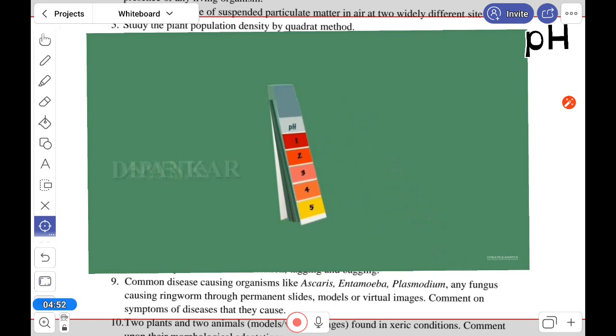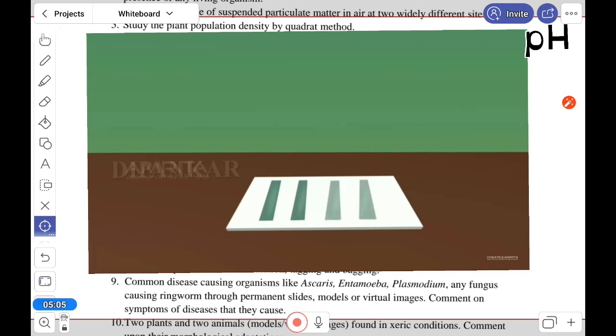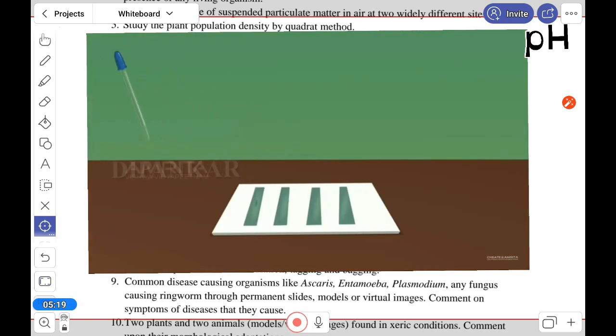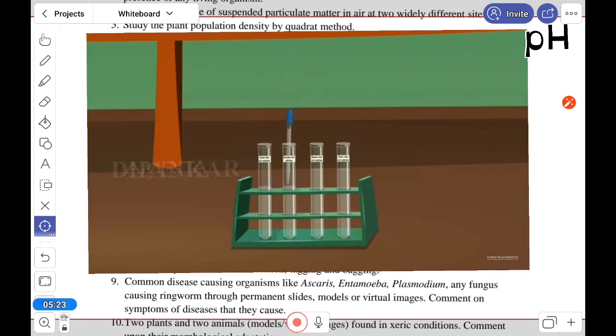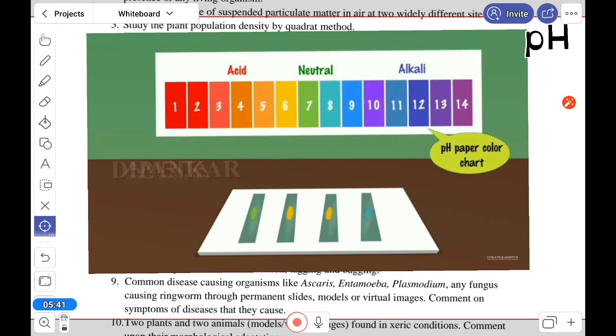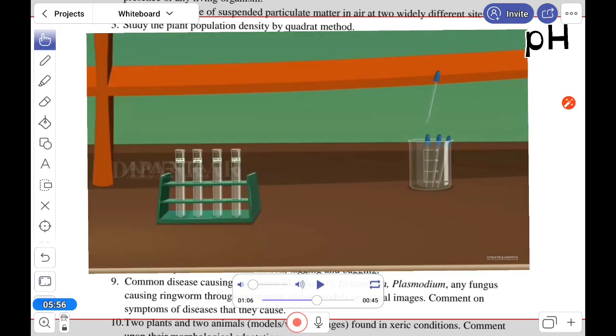Next, we use pH paper. Here we have 4 papers for the 4 samples. With the help of a dropper, the solution is taken and placed on the pH paper. We have to wait a few minutes for the color to appear. Then we check with the pH paper color chart that is given, and we can detect the approximate value.